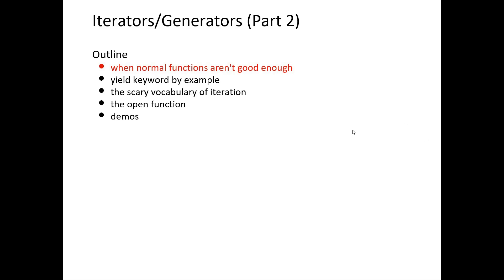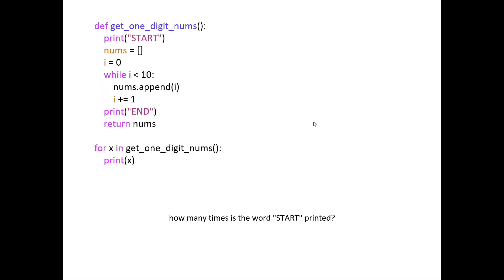Now on to the new material. Today we're talking about iterators and generators — mostly generators. These are functions that have the keyword 'yield' in them. We'll also cover some vocabulary. Let's start with a normal function: 'get_one_digit_nums', which builds a list of numbers zero through nine. It prints 'start', runs a while loop appending each number, and then returns the list.